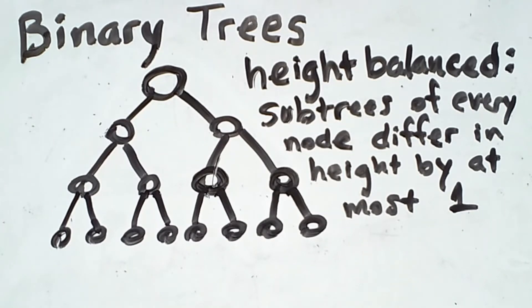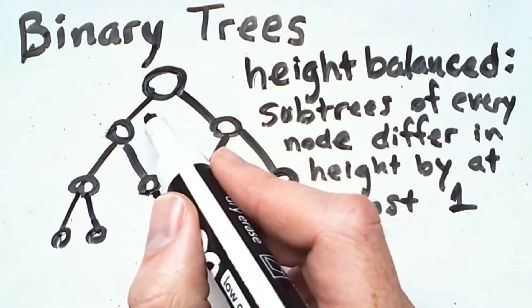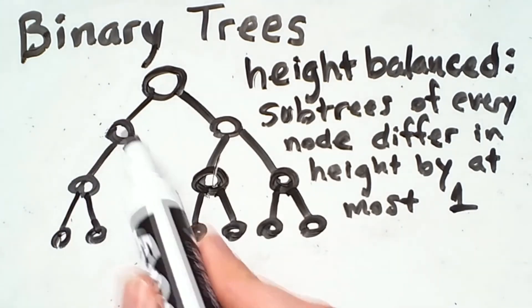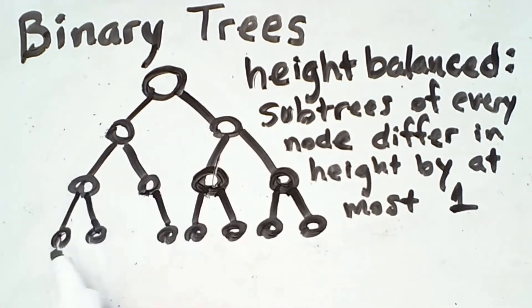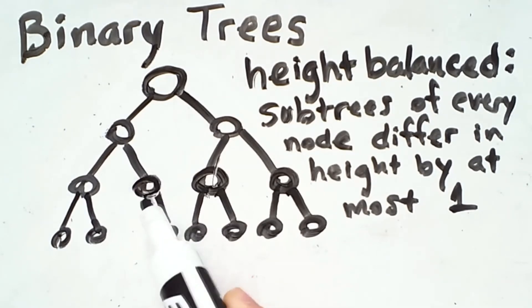However, there are many trees which are not completely balanced, which are height balanced. For example, this tree. The left subtree of the root still has a height of 3, and so does the right subtree of the root. And looking down at this section where I've actually modified the tree, this subtree has a height of 2, this subtree has a height of 2. And at this point, the left subtree of this node is empty and therefore has a height of 0. The right subtree has a height of 1. So those heights are different, but the difference is only 1, which is allowable.